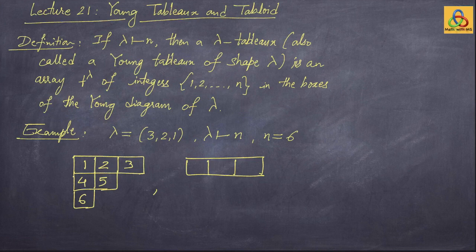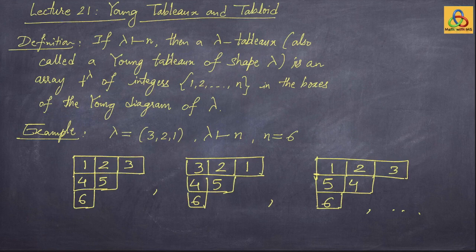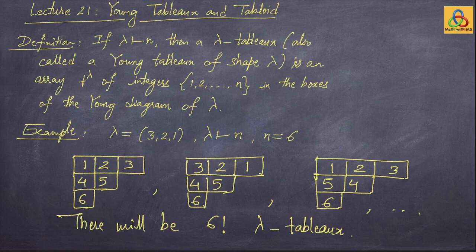For example, I could have 1 2 3 / 4 5 / 6 — this is one λ-tableau. I could also have 3 2 1 / 4 5 / 6, or 1 2 3 / 5 4 / 6, and so on. There will be 6! such λ-tableaux. You may recall from the previous lecture that we defined the domination order on the set of all partitions of a given integer.